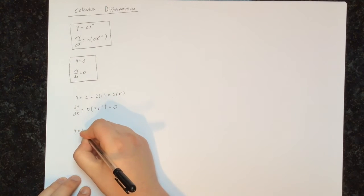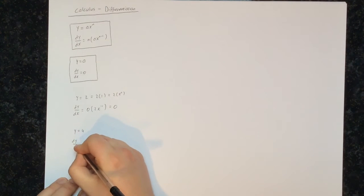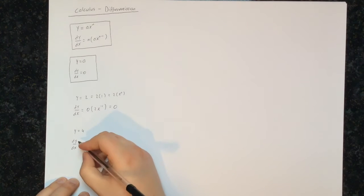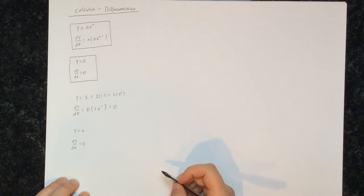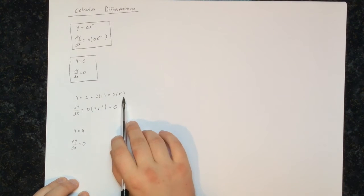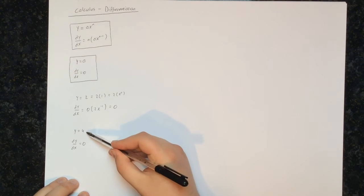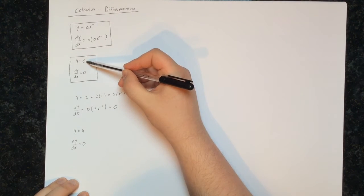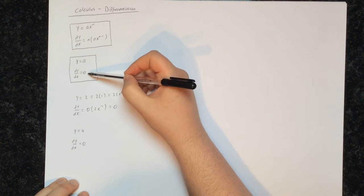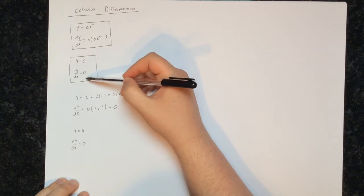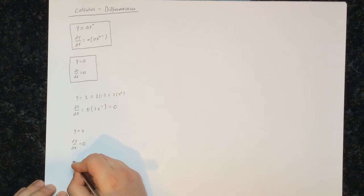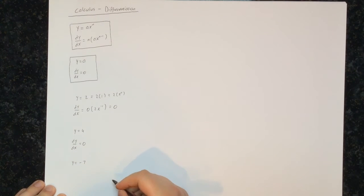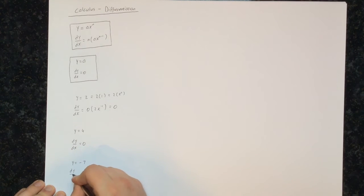Let's try some more examples. Let's say y equals 4 — then what is dy/dx? Well, y is a constant with no x's, so dy/dx will be equal to 0. You could work it out the long way, but it's much faster to just use the formula directly. When y is some constant term — meaning y equals something without any x's in it — then dy/dx will be equal to 0. So again, let's try y equals minus 7. Well, again we have a constant, so dy/dx will be equal to 0.